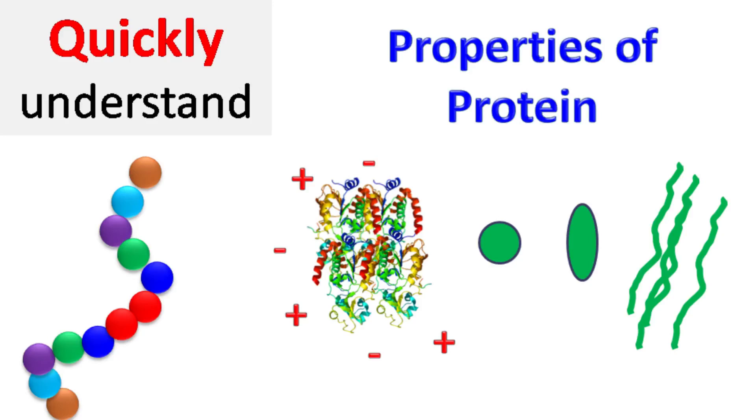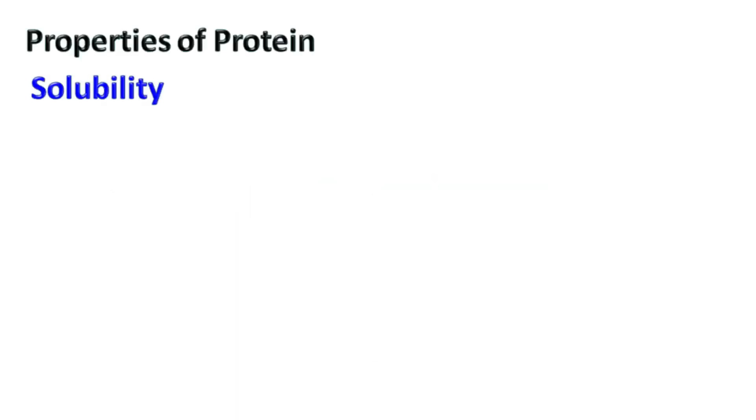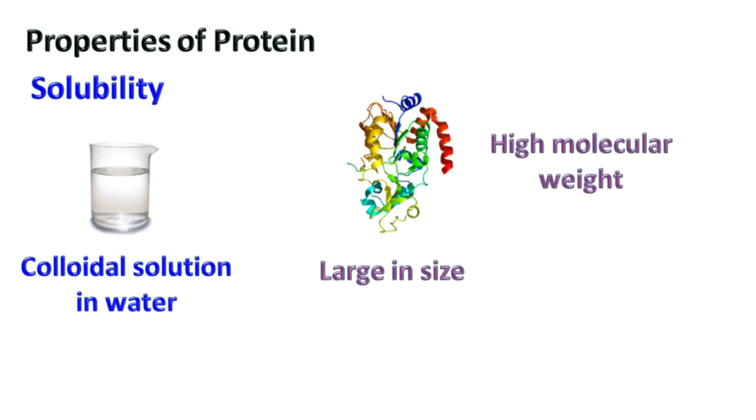Hey everyone, quick biochemistry basics here. Let's talk about properties of proteins. Solubility: proteins usually form colloidal solution when dissolved in water. This is because proteins are large in size and have a high molecular weight.